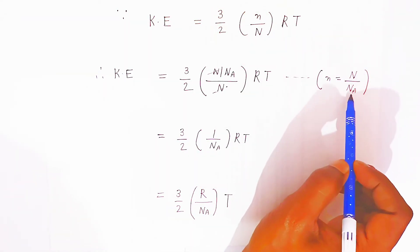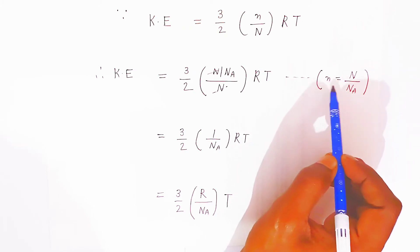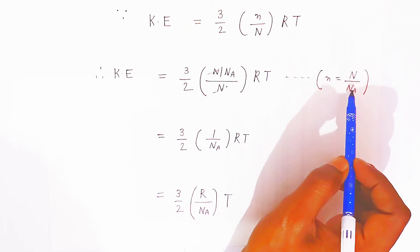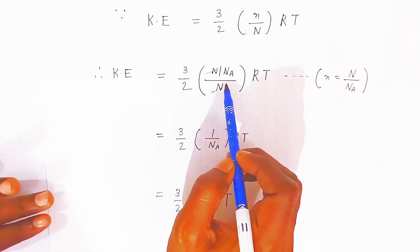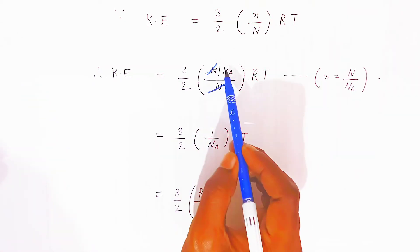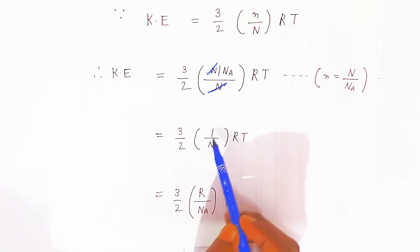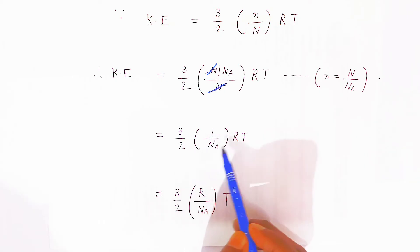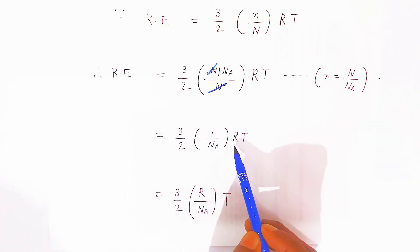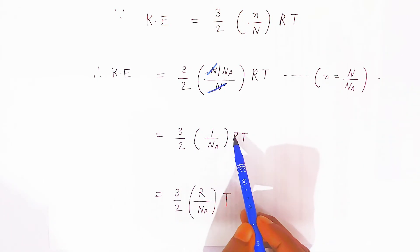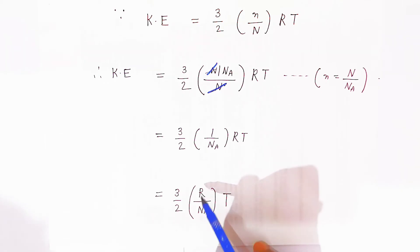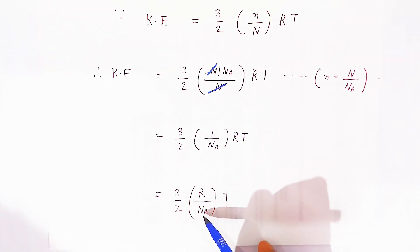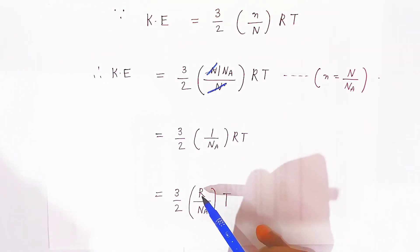You know that the number of moles n equals the number of gas molecules N divided by Avogadro's number N_A. Substituting n = N/N_A, the N's cancel, and we are left with kinetic energy = (3/2)·(1/N_A)·RT = (3/2)·(R/N_A)·T.